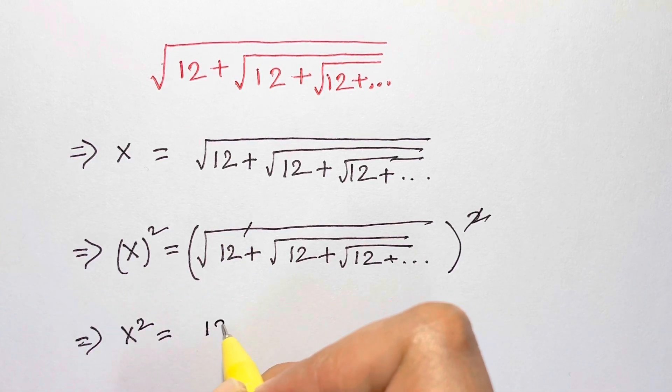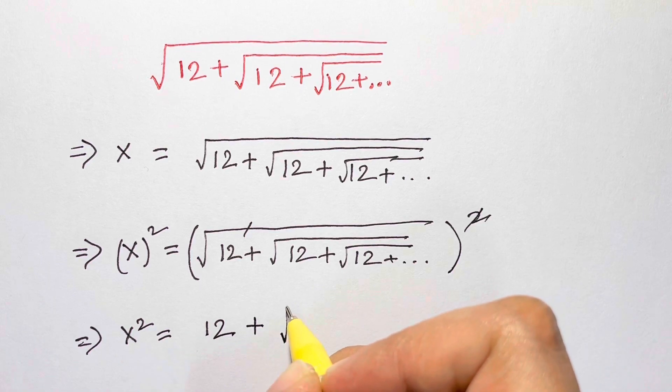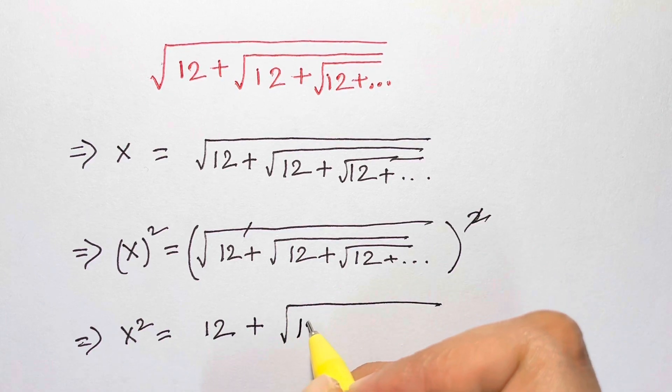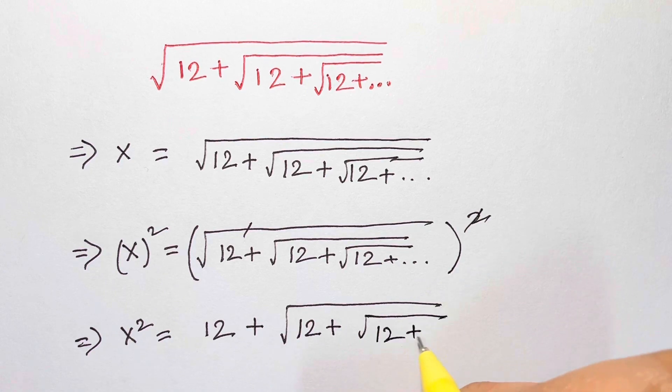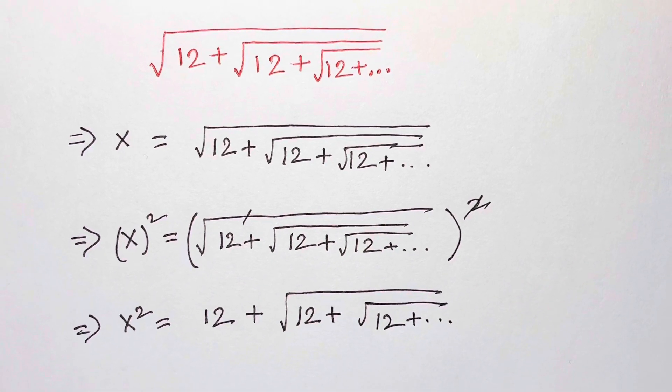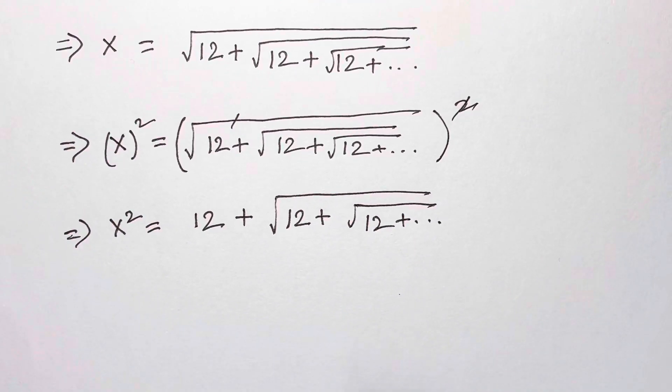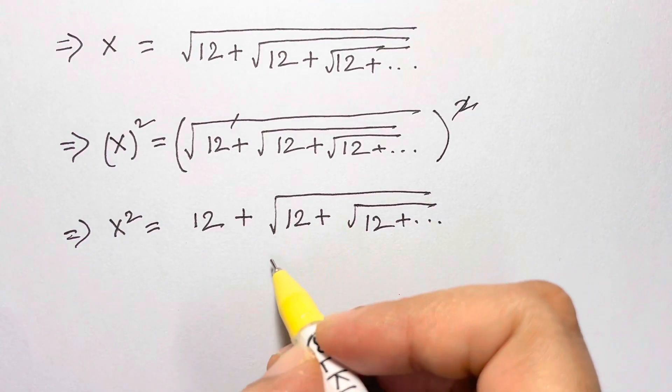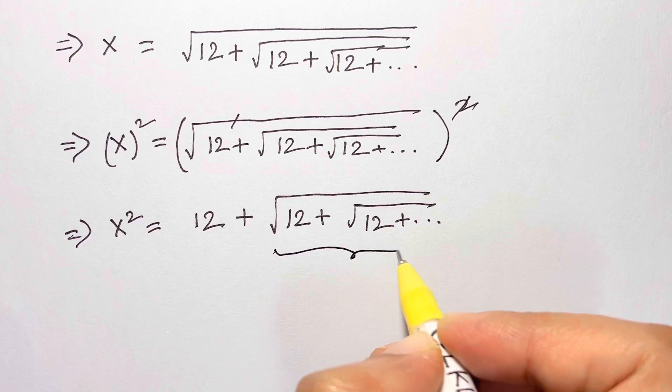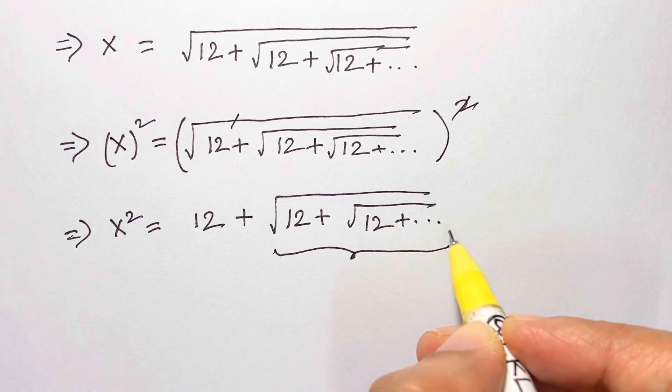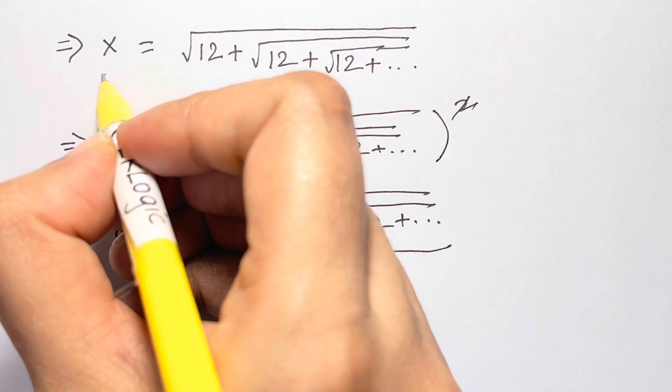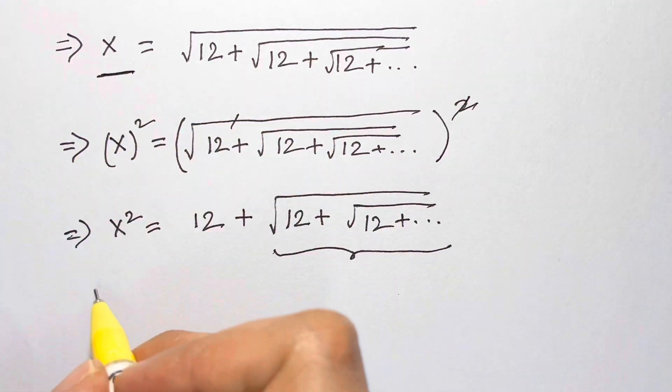Now if you see this part, this whole thing square root of 12 plus square root of 12 plus and so on, is the same thing what we have taken here, which is equal to x.